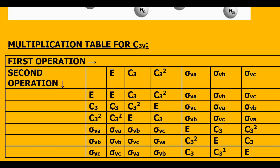In the second row, E multiplied by C3 is again C3. Next, C3 multiplied by C3 is C3 squared. Then C3 squared multiplied by C3: remember that Cn raised to n is always equal to E. C3 squared multiplied by C3 equals C3 cubed, and C3 cubed equals Cn raised to n, therefore that value comes out to be E. Then comes the operation sigma VA multiplied by C3, for which we have to refer to our figure.